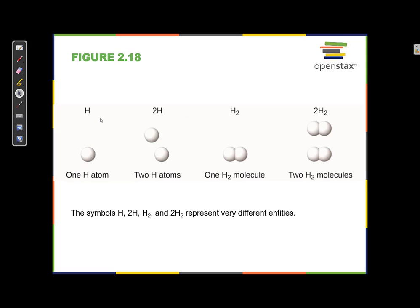Hydrogen generally does not come as one H atom. When hydrogen is on Earth, we see it as H2 — it comes as a hydrogen molecule. So we can write the symbol H to refer to one hydrogen atom by itself, even though that's not what it looks like on Earth. We could write 2H to refer to two hydrogen atoms. But when I write H2, I'm showing that those atoms are stuck together. And 2H2 shows that I have two of those molecules stuck together.